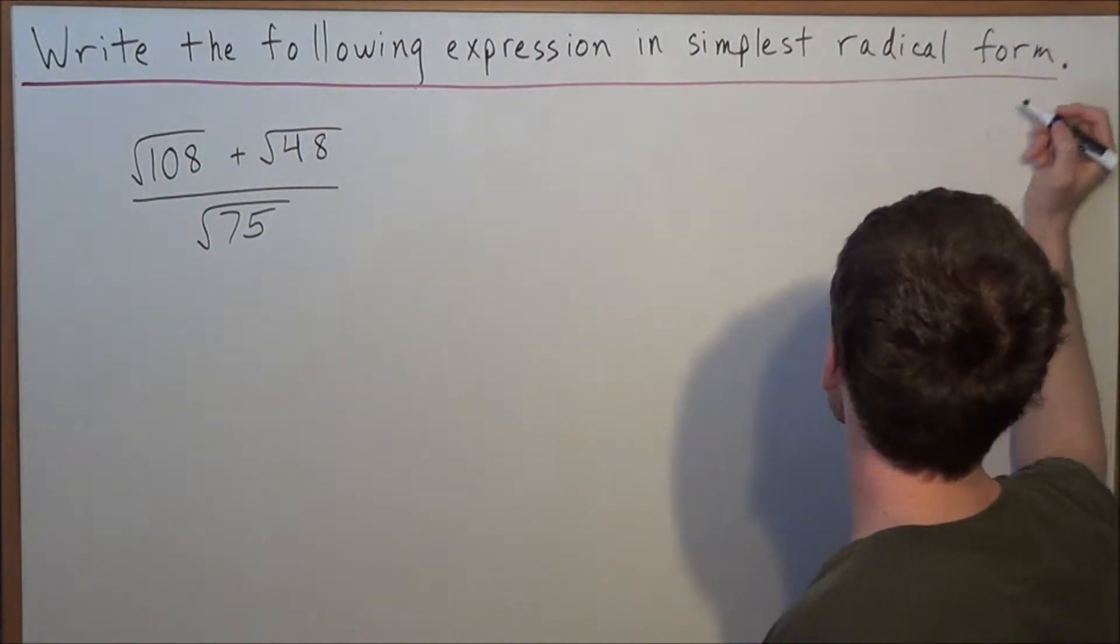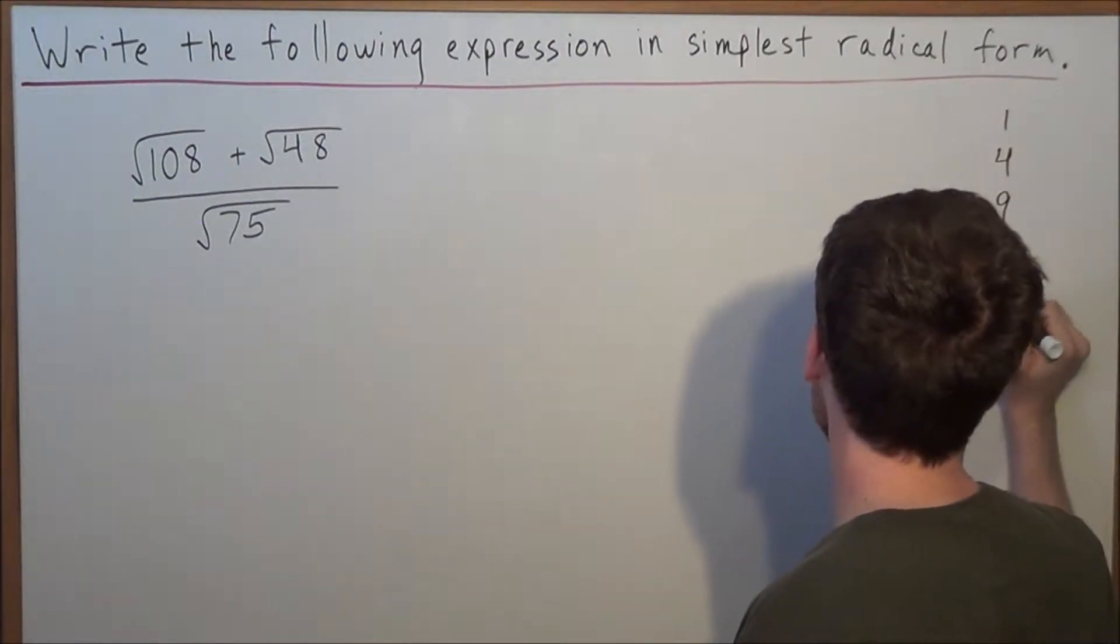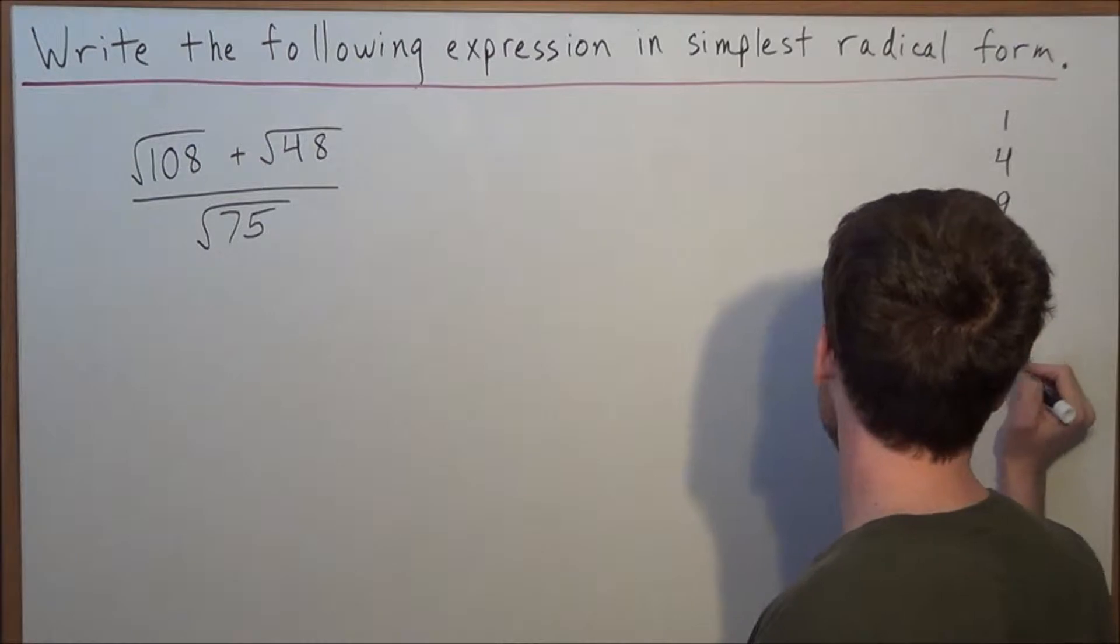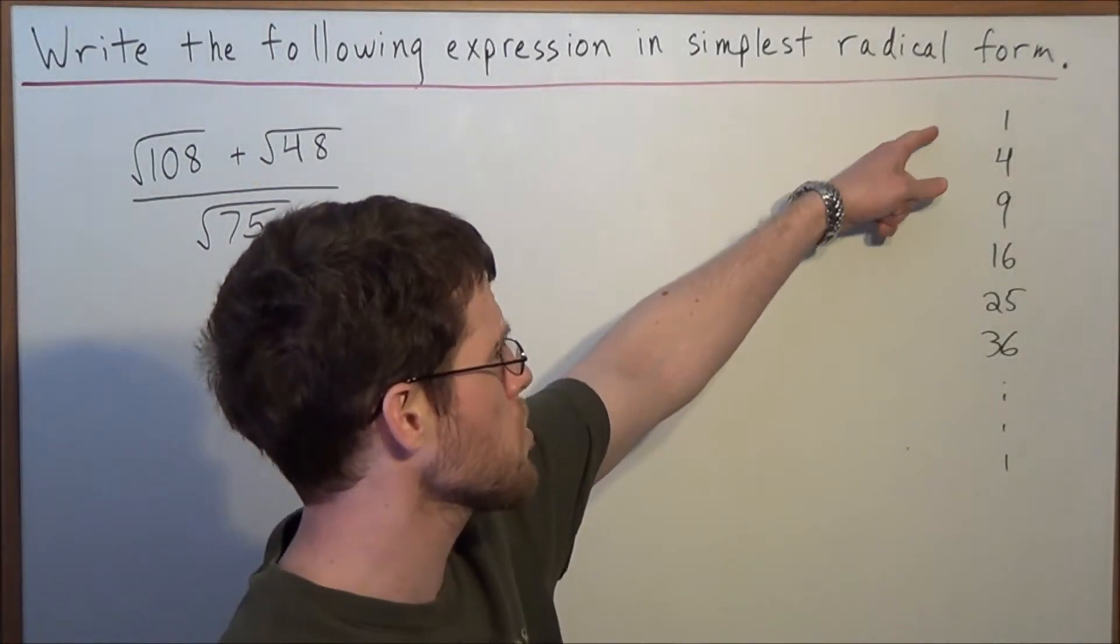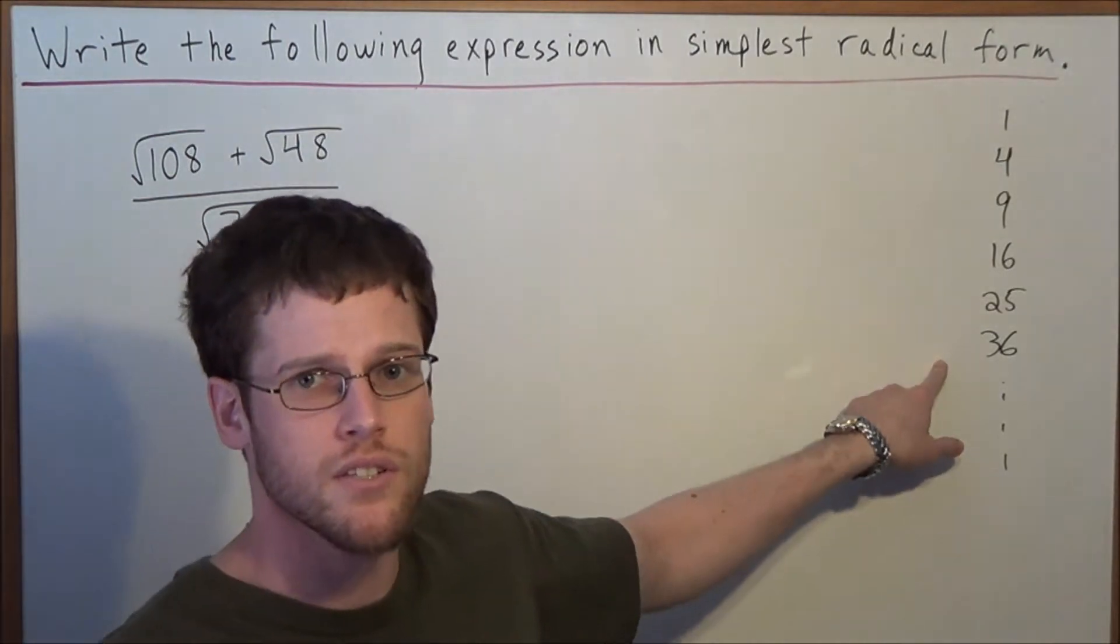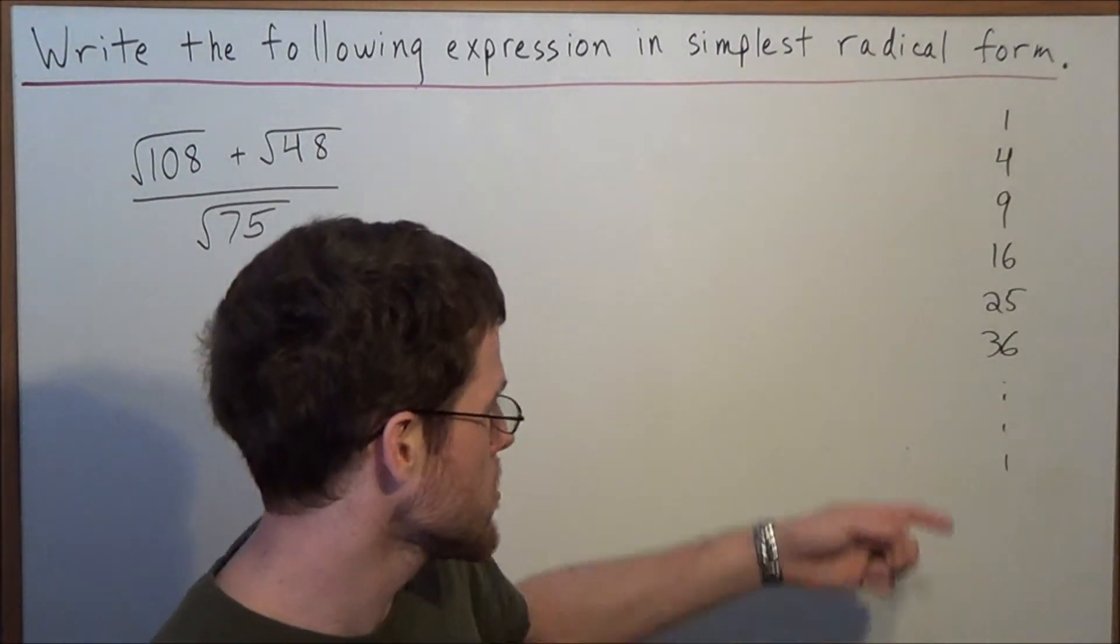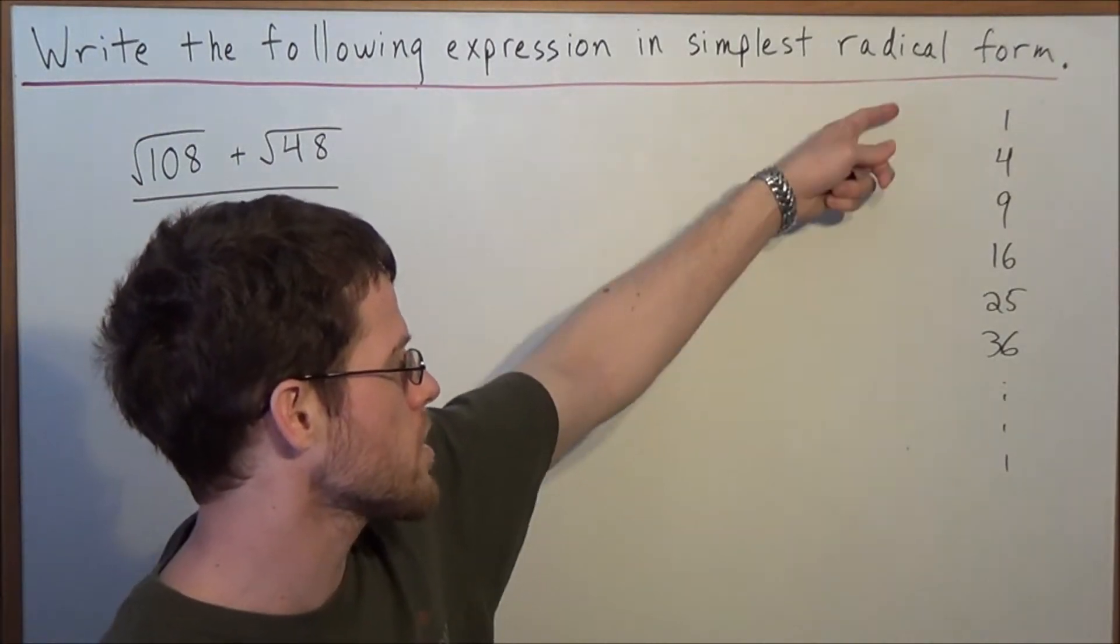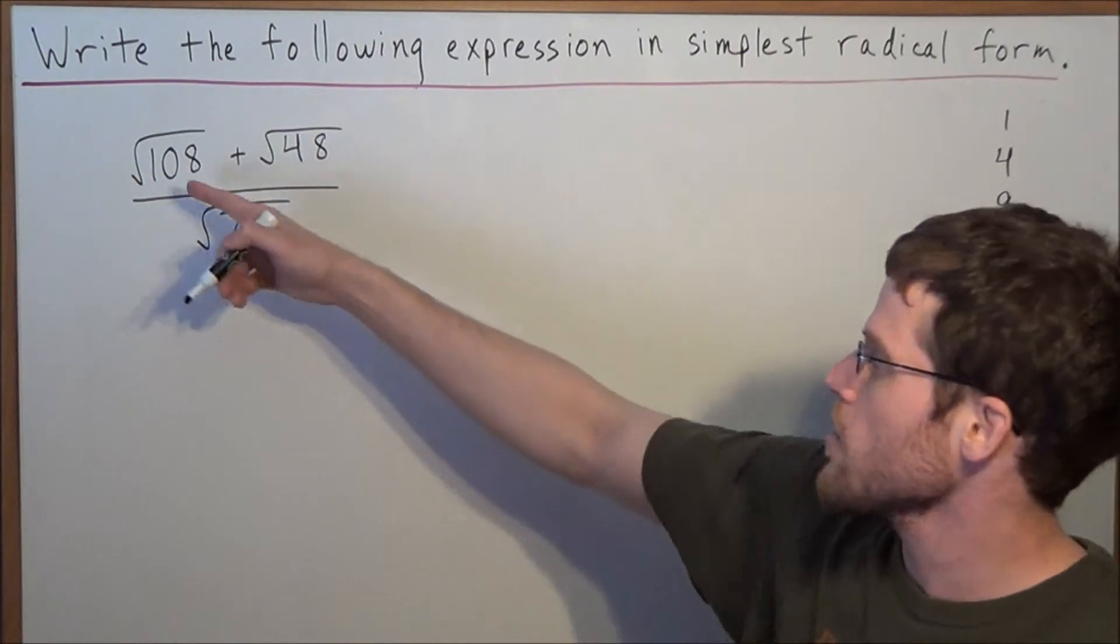So the key is that we're going to consult the perfect squares. We have 1, 4, 9, 16, 25, 36, and the list goes on. But for most examples, you won't look at anything bigger than 36. But in the event that you do, you'll have other methods of breaking it down. But generally, these are the only perfect squares that we're going to be playing with for these examples.